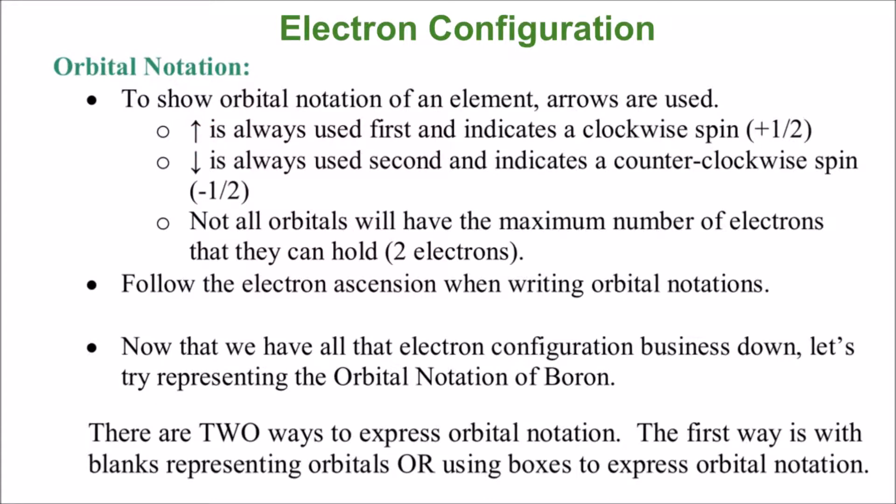An upward arrow indicates a clockwise spinning electron that has a plus one-half quantum spin number. A downward arrow indicates a counterclockwise spinning electron. Not all orbitals will have the maximum number of electrons in them, and we will follow the electron ascension when filling our orbitals.